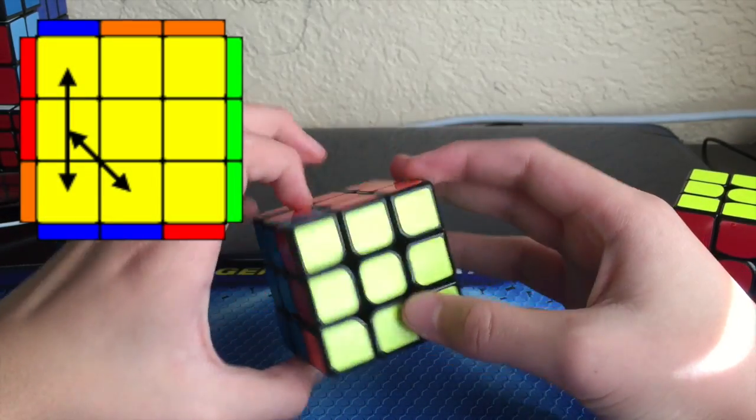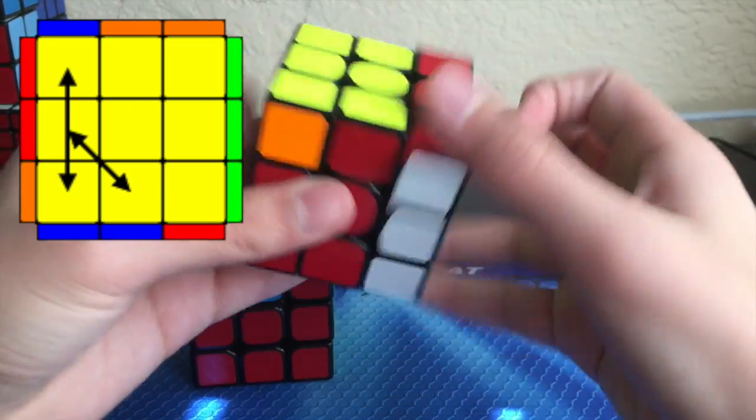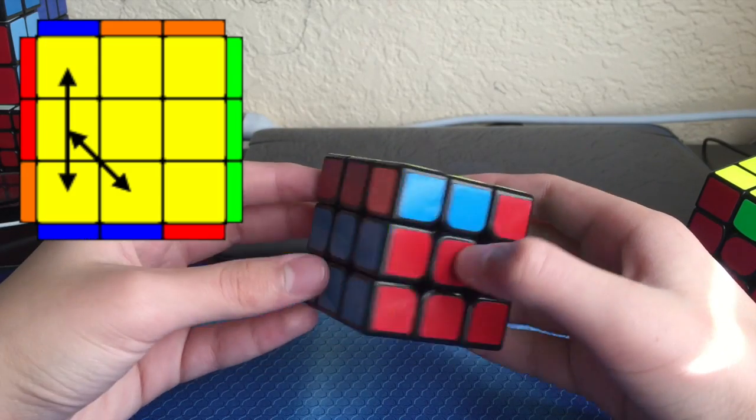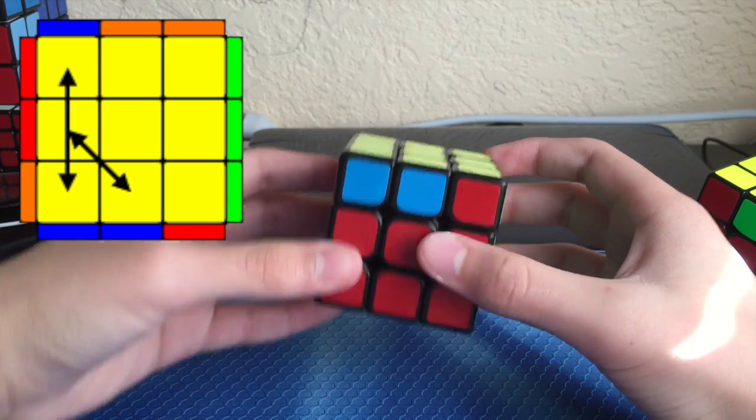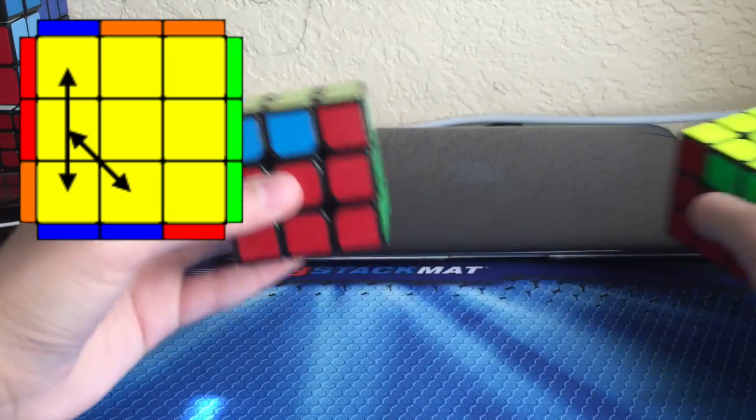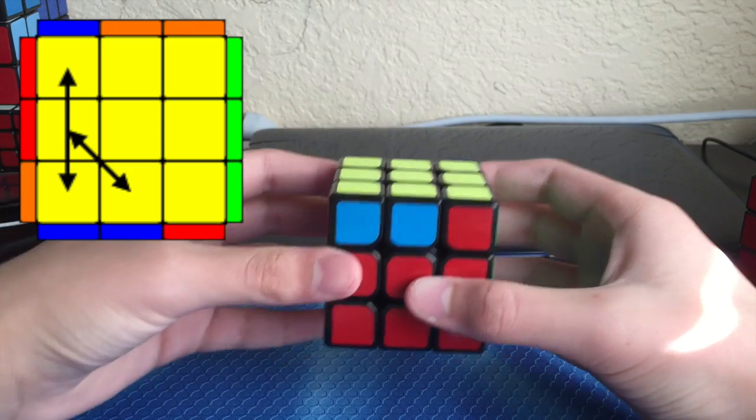This is the first J-perm, JA. It's quite literally just a mirror of JB. Personally, I don't use the algorithm that most people use - I prefer just the mirrored version. Once you get the muscle memory down for JB, JA is not a problem. You just have to do it with your left hand.